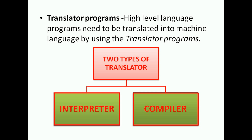Although we write programs in high level language, the computer only understands binary language — zeros and ones. So again we need to convert high level language into machine language. This is done using translator programs. High level language programs need to be translated into machine language using translator programs, of which there are two types: interpreter and compiler.